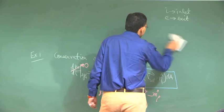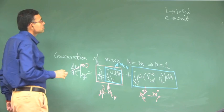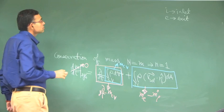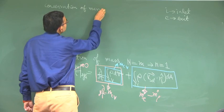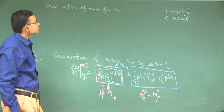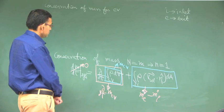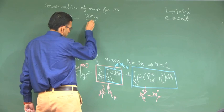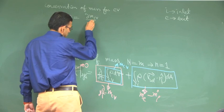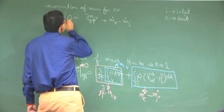So the conservation of mass for a control volume can be written in this way, as a rate equation.